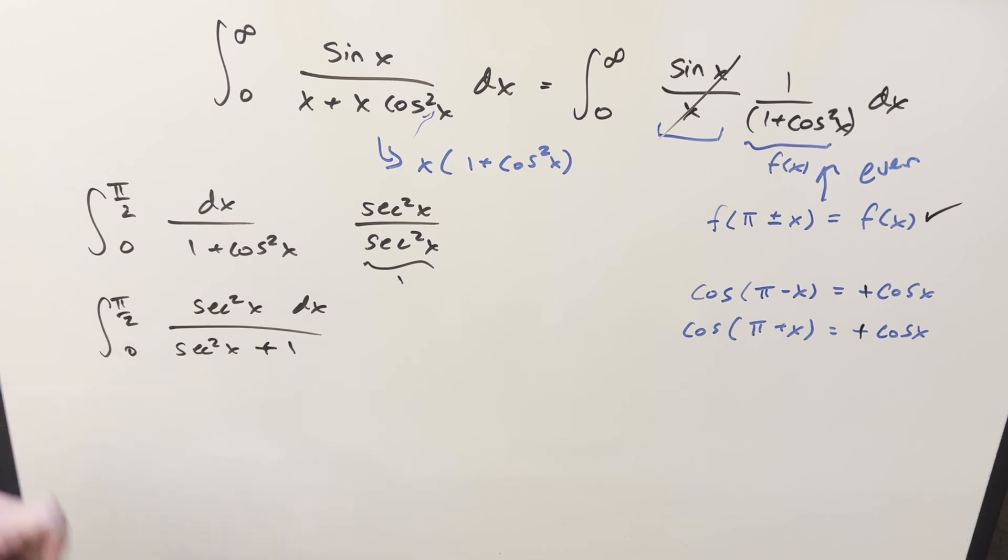But in order to do a u substitution, what I want is to get a tangent in here. Because if I have tangent, we got our secant squared in the numerator, so it's like perfectly set up almost. What we can do is use this identity. Secant squared is the same thing as tan squared x plus one. So let's put this together and rewrite it really quickly.